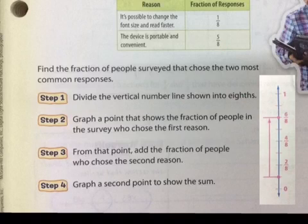Okay? So eighths because the whole is divided into eighths. You can see that I started with zero, one-eighth, two-eighths, three-eighths, four-eighths, five-eighths, six-eighths, seven-eighths, and then a whole, eight over eight. Right? Graph a point that shows the fraction of people in the survey who chose the first reason. So the first reason is one-eighth. We find one-eighth and there it is. So we graph it.